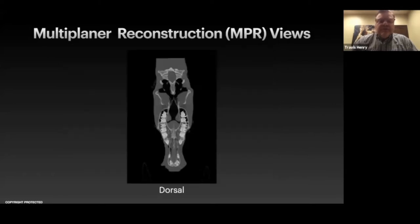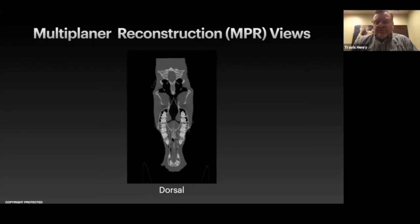The next plane is the dorsal — sometimes called the coronal, but widely called the dorsal in veterinary medicine. This is where we can look straight down on all of the endodontic chambers of the teeth. These images are generated by the computer based on the volume of information captured by the CT unit.